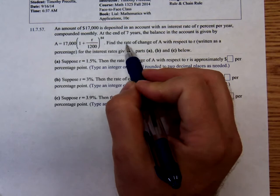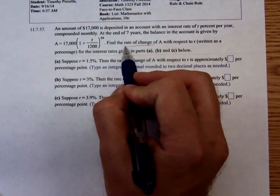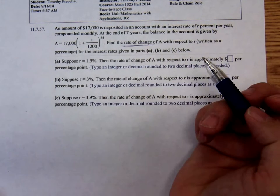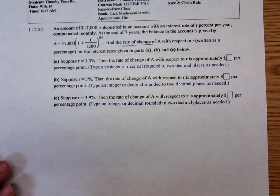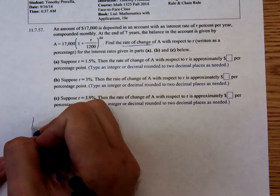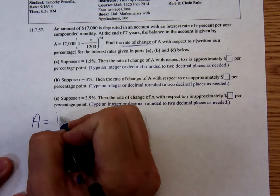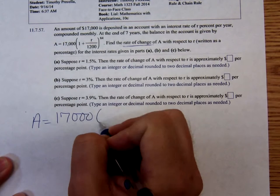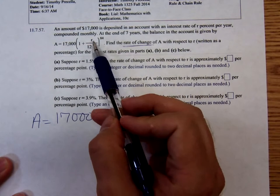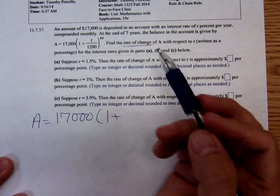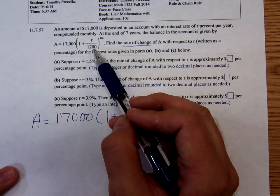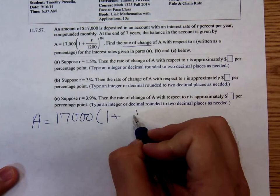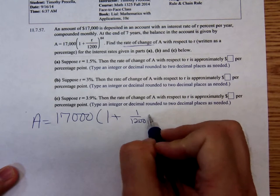The goal is to find the rate of change. When you see that phrase rate of change, what should you think of? Derivative. So we have to find the derivative. Let me rewrite this problem: it's seventeen thousand times one plus - notice r over twelve hundred. I don't like it when it's just a variable over a number. I'm gonna think of it as one twelve hundred times r to the eighty-four power.